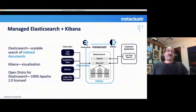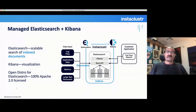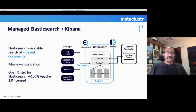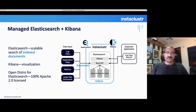We're also looking at managed Elasticsearch and Kibana. Elasticsearch is for the scalable search of indexed documents, and Kibana is for visualization and analysis of documents. We provide the Open Distro for Elasticsearch, which is an Apache 2 license.